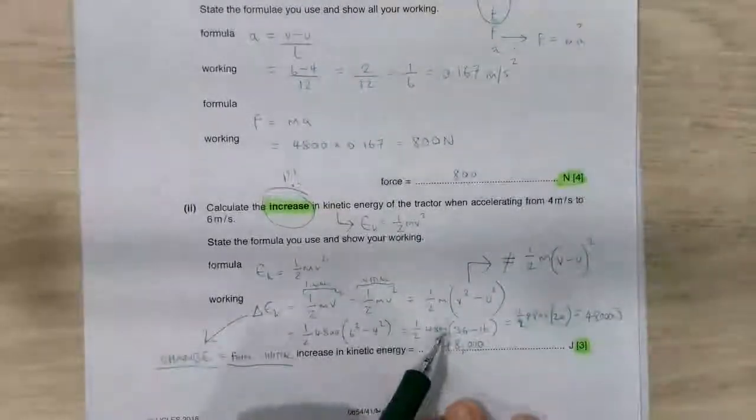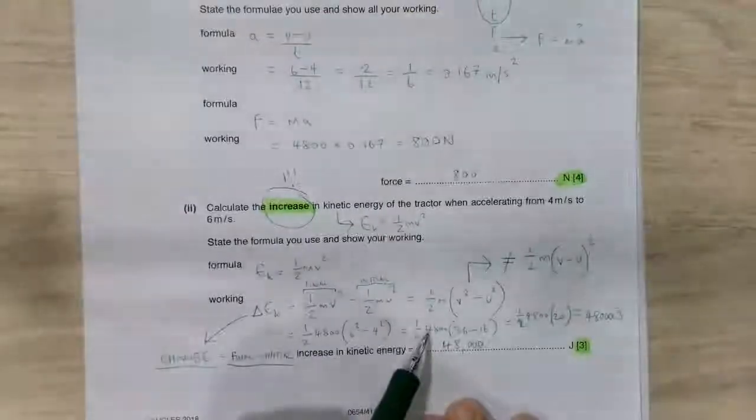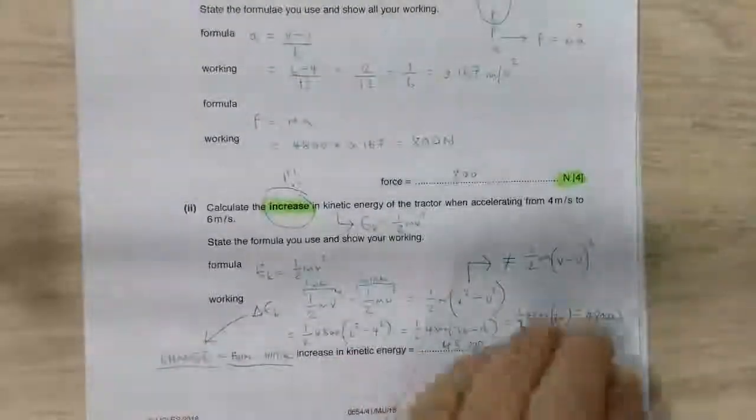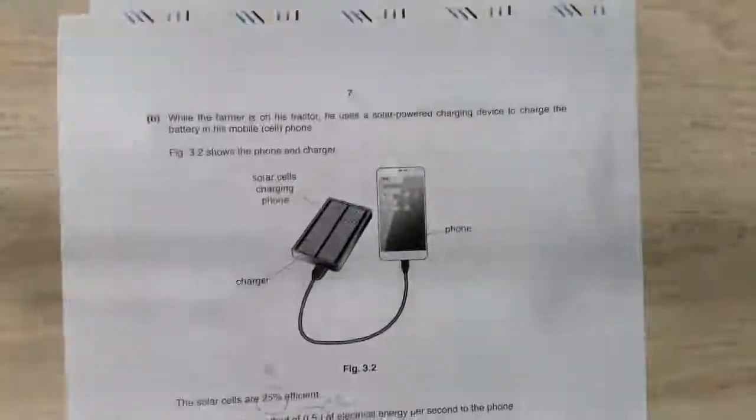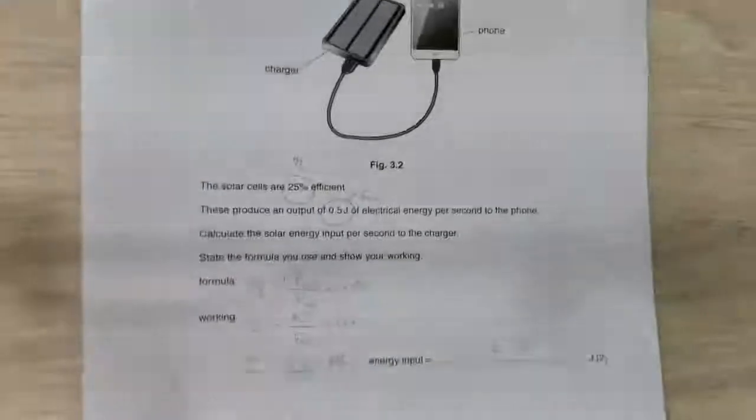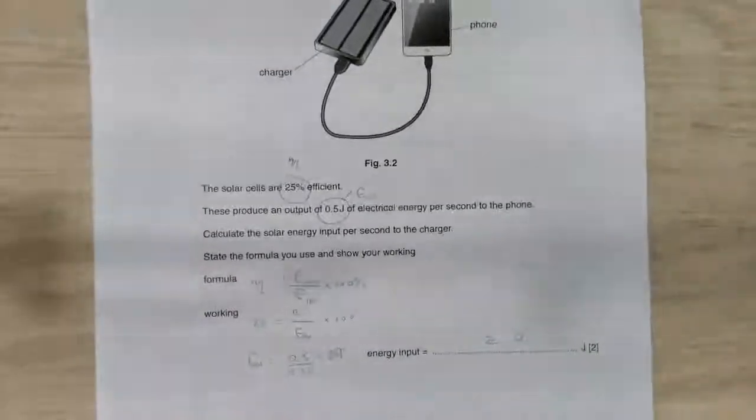After that, you've got a bit of maths to go through. And then we come out at a very big number, 48,000 joules. Another calculation. Notice we have 9 marks of calculations so far in this paper. It's pretty amazing.